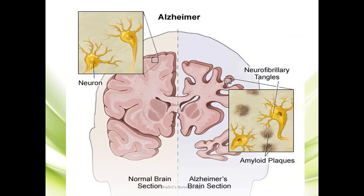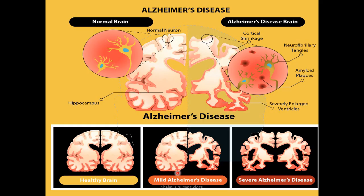This picture shows a normal brain with neurons without any plaques or tangles, and here is an affected brain where you see plaques and tangles. These amyloid plaques and neurofibrillary tangles are mostly associated with Alzheimer's disease. Here you see a healthy brain, a mild Alzheimer's disease brain which is mildly sunken, and then a severely affected Alzheimer's disease brain.